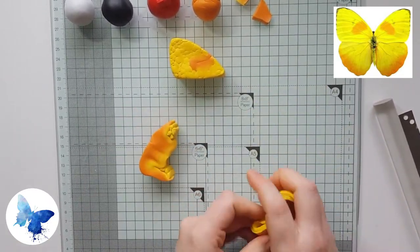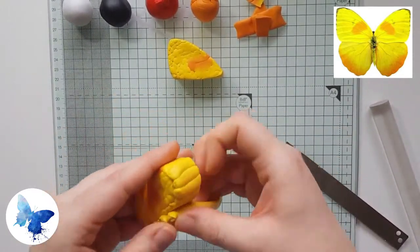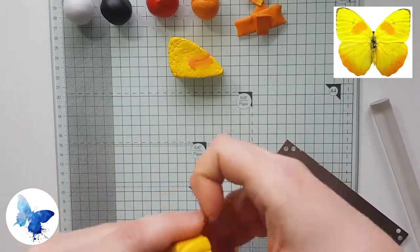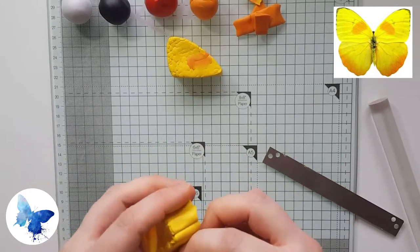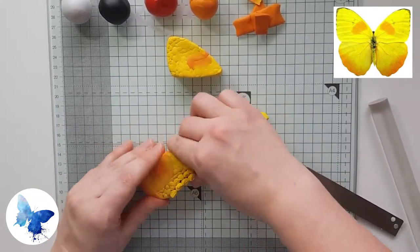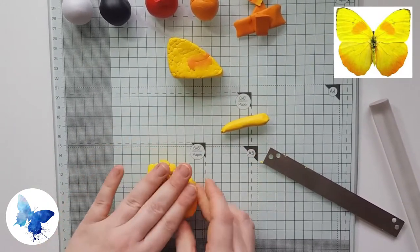And once you're happy with how the orange is going to look you can then start building up the wing with the yellow again using the sausage technique.